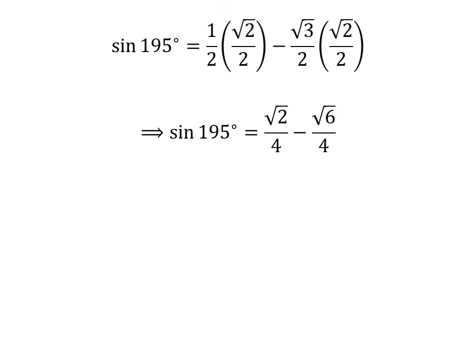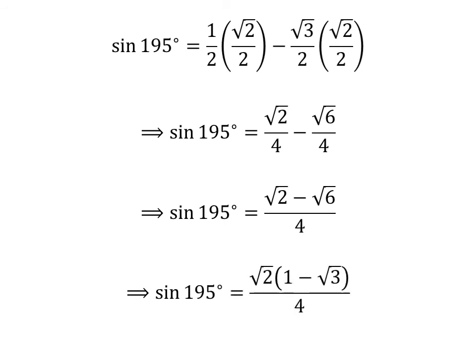Straight multiplication gives us sine of 195 degrees is equal to 1/2 times square root of 4. As the denominator of both fractions in the above expression is the same, sine of 195 degrees is equal to 1/2 times square root of 2 minus square root of 4. Taking out the common factor square root of 2 in the numerator gives us sine of 195 degrees times square root of 3 is equal to 1/2 times square root of 3 upon 4.